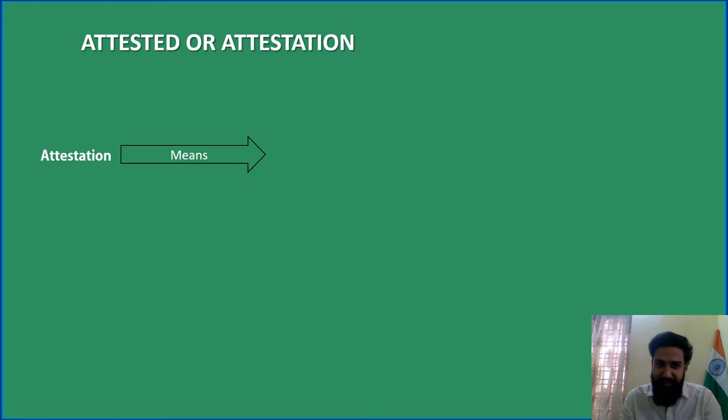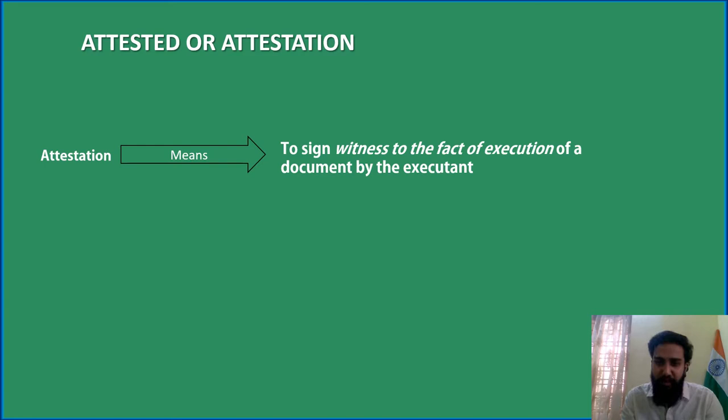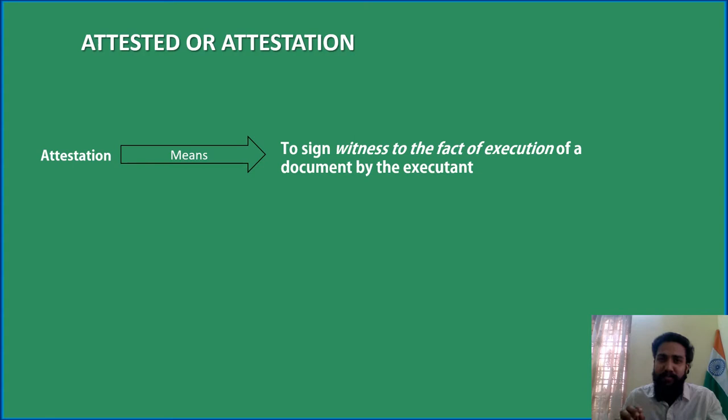Attestation means to sign witness to the fact of execution of a document by the executant. What is Execution? When an owner of the property wants to transfer his property for some consideration to somebody else, he has to sign on some document, especially for an Immovable Property. The document is the only proof to show others that the ownership belongs to whom. He has to put his sign on that stamp paper and transfer it to somebody else. That process is known as the execution.